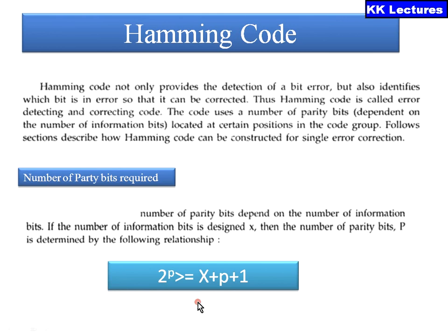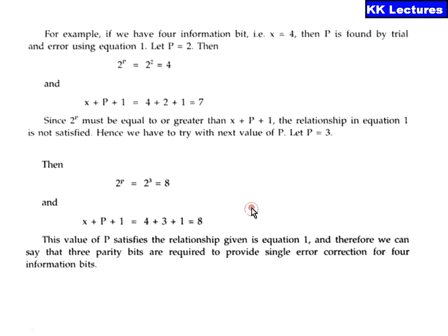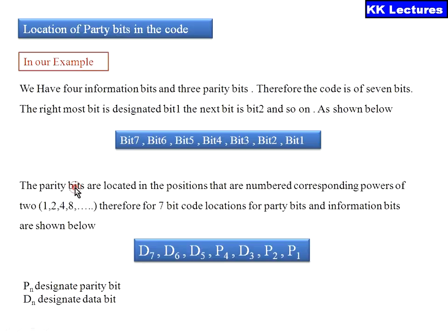For example, if we have 4 information bits, x = 4. When p = 2: 2^2 = 4, and x + p + 1 = 4 + 2 + 1 = 7, so 4 ≥ 7 is false. When p = 3: 2^3 = 8, and 4 + 3 + 1 = 8, so 8 ≥ 8 is satisfied. Therefore, the number of parity bits required for 4 information bits is 3. This is found using the trial and error method.